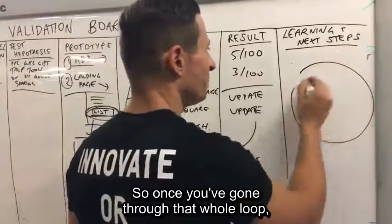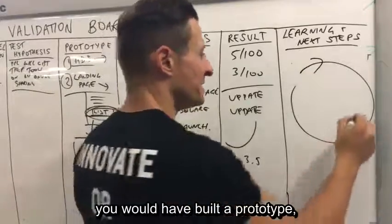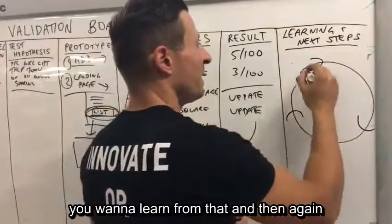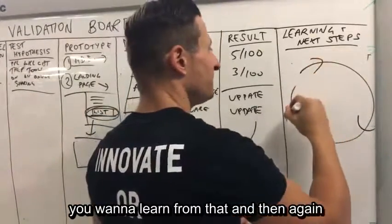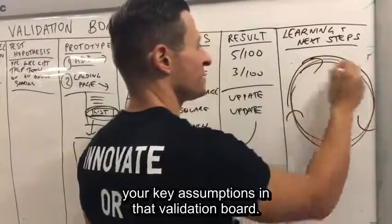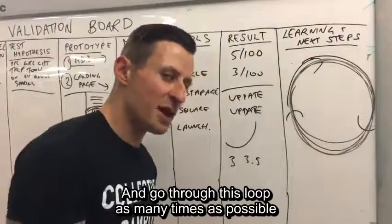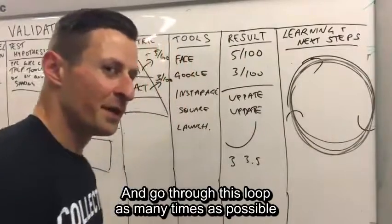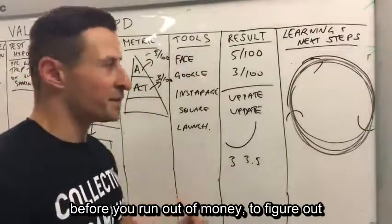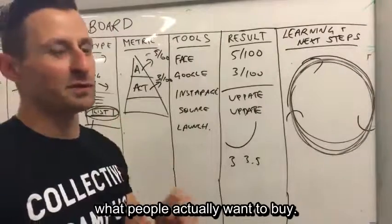Once you've gone through that whole loop, you would have built a prototype, taken it to market, got some data, learned from it, and gone back to your starting block to update your key assumptions in that validation board. Go through this loop as many times as possible before you run out of money to figure out what people actually want to buy.